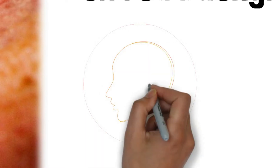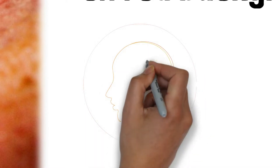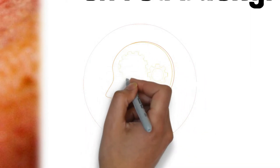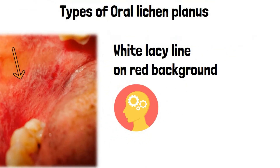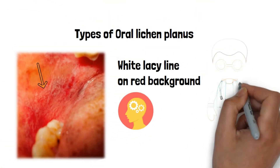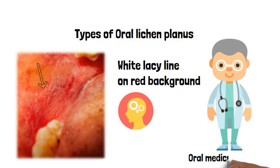Lichen planus can be represented in various forms in the oral cavity, and it is sometimes difficult to identify. Many times it is confusing to differentiate from other diseases. Hence it's always better to consult an oral physician or an oral medicine expert for diagnosing the disease.